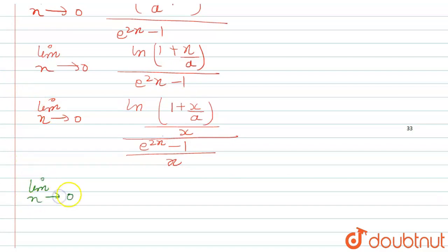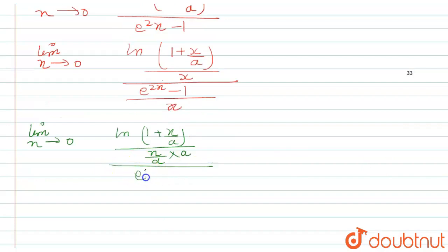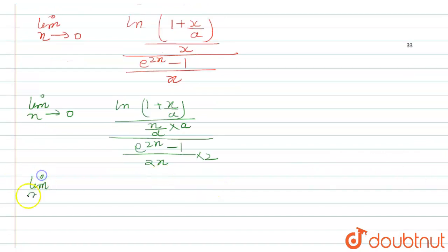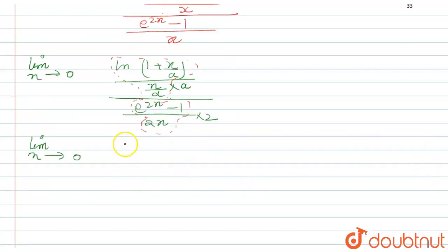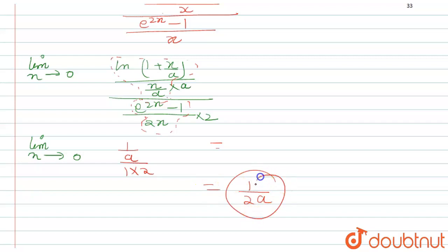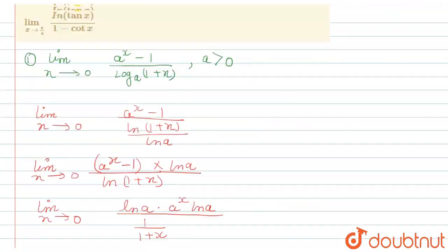For the numerator, we write limit x tends to zero of ln(1 plus x/a) upon x, multiplied and divided by a. For the denominator, e raised to the power 2x minus one upon x, multiplied and divided by 2. We know that as x tends to zero, ln(1 plus t) over t equals one, and (e^t minus 1) over t also equals one. So it is left with one over a times one over 2, giving the answer one over 2a.